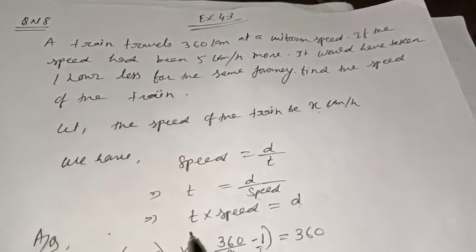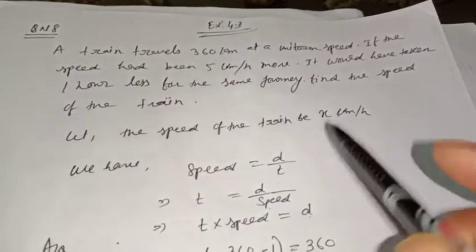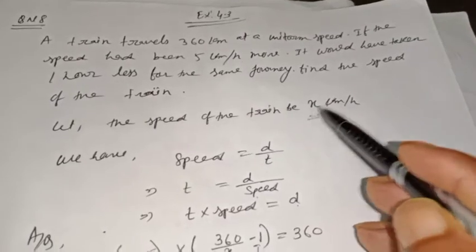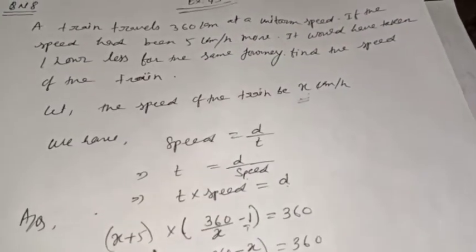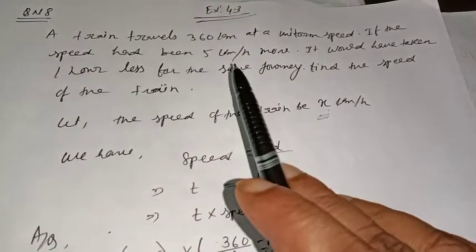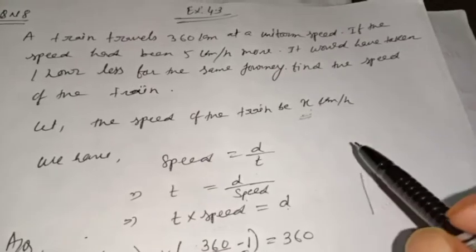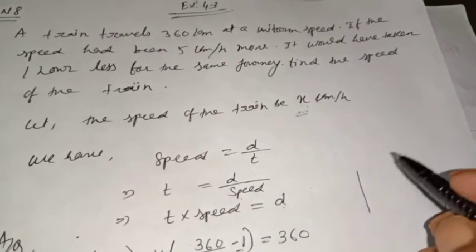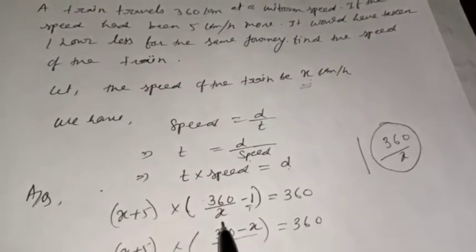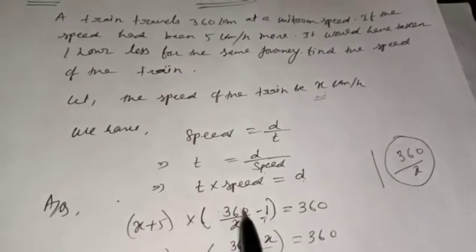According to the question, time into speed equals distance. Now speed has been changed — 5 km/hr more, so the new speed is x plus 5. The actual time is 360/x. One hour less means the new time is 360/x minus 1. So the new speed into new time equals 360: (x+5) into (360/x − 1) = 360.